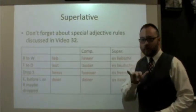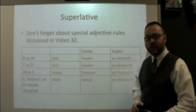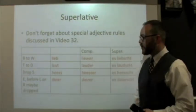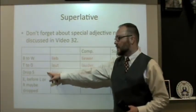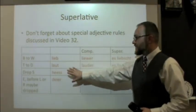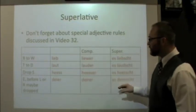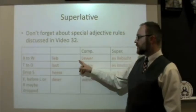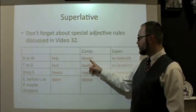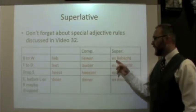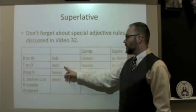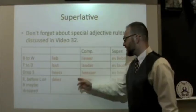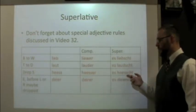There are a couple of special things to remember, and this is where the previous video on adjective endings will click. There are special adjective rules from video 32: b's change to w's, t to d's, drop the s. For the comparative form we follow the original rules — for example, lieb changes to lieber, the b does change to w. But in the superlative it goes back to the b: es liebscht. T to d: laut goes to lauder, and in the superlative stays the same: es laudscht. Drop the s: heys becomes heyser, keeping two s's — es heyscht.